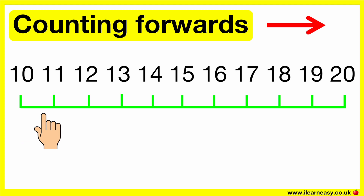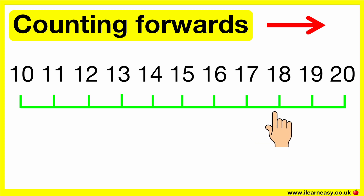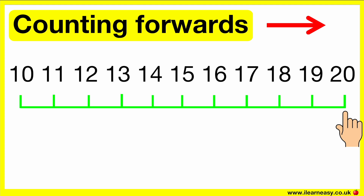Ten, eleven, twelve, thirteen, fourteen, fifteen, sixteen, seventeen, eighteen, nineteen, twenty. Here, we are counting forwards using two-digit numbers from ten to twenty. Remember, a two-digit number is any number between ten all the way to ninety-nine. In this number line, the two-digit number ten has the lowest value and the two-digit number twenty has the highest value.